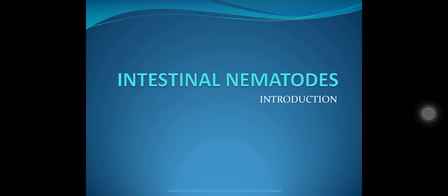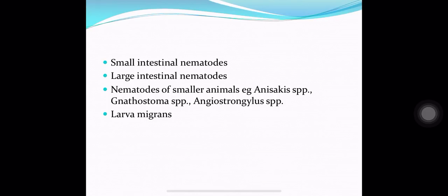Introduction to intestinal nematodes. Intestinal nematodes can be small intestinal or large intestinal. Besides these, there are some nematodes of smaller animals which accidentally infect human beings. Since humans are not the normal host, these nematodes wander about in the body without developing further. Examples include Anisakis, Gnathostoma, and Angiostrongylus, giving rise to larva migrans.